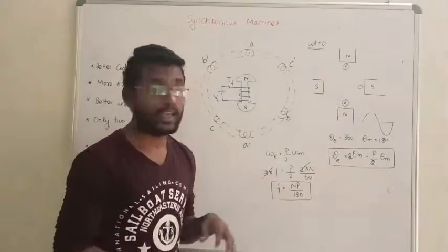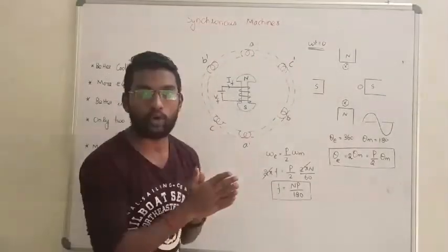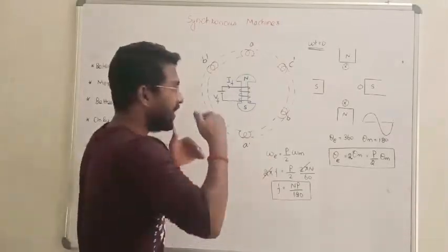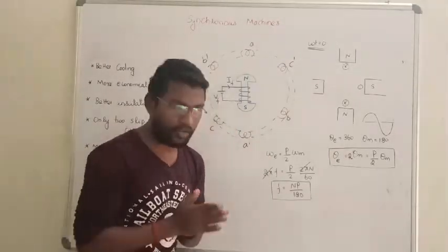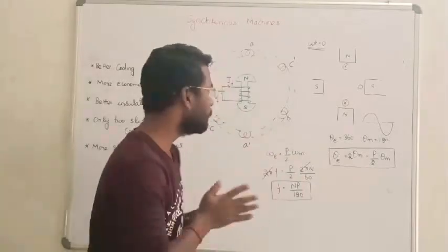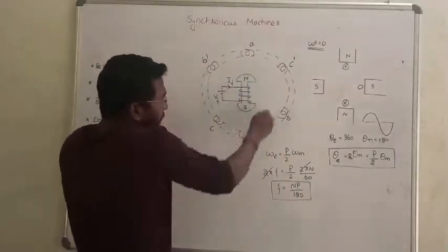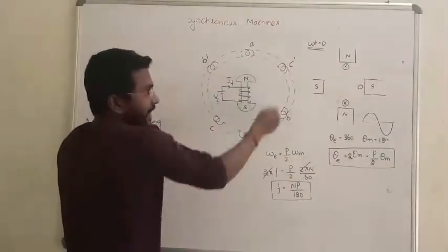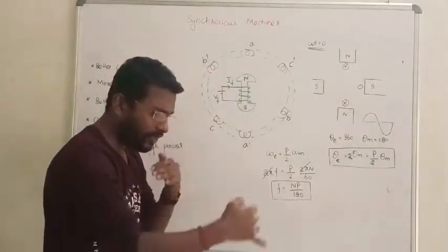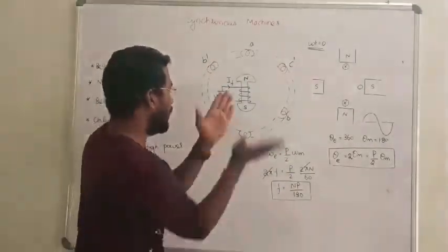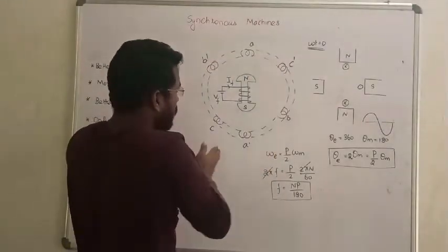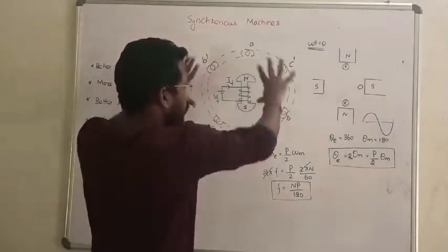If we supply the three-phase winding, internally a magnetic field will be developed, and that magnetic field will rotate. That is called the synchronous speed. So a rotating magnetic field is developed when there is a current flow in this three-phase winding. The rotating field will come to the rotor — this is the standard three-phase rotating field.